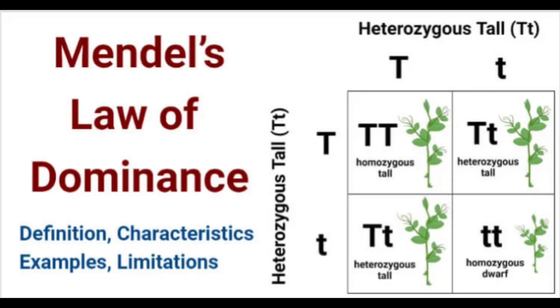Let's get right back into this. For this example we've got the good old Punnett square. What we have here is mom up top — looks like she's providing a heterozygous tall situation — and dad on the side there providing a heterozygous tall situation as well.